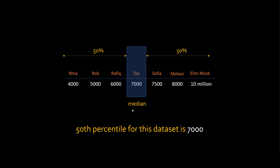What does 50th percentile mean? The 50th percentile here is 7,000, and it means that 50% of my data points have a value less than 7,000. I have a total of 7 data points, and 3 data points are around 50%. So 50% of data points have a value less than 7,000 — hence, 7,000 is my 50th percentile.